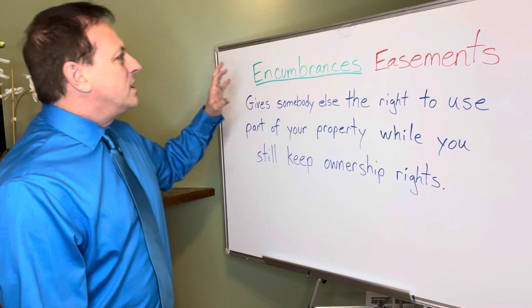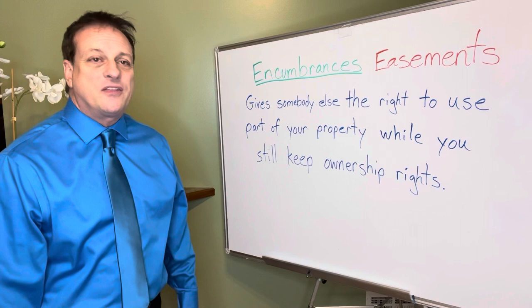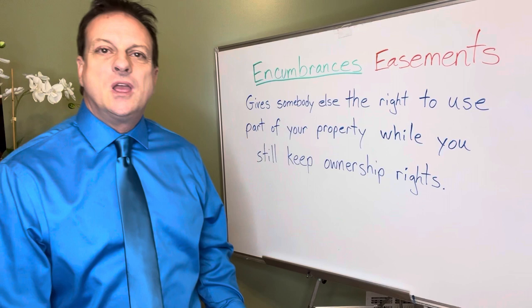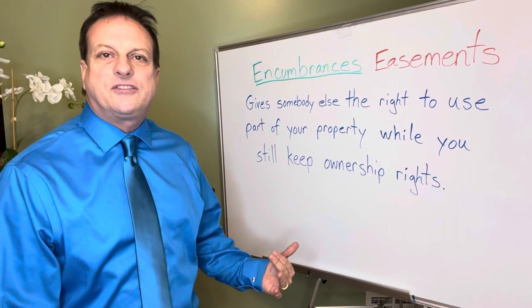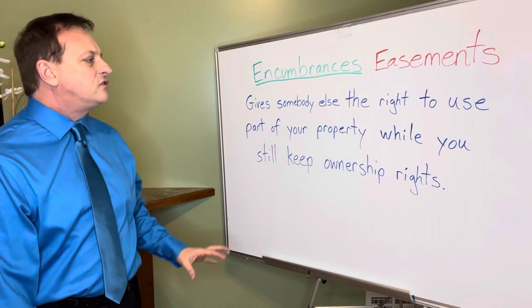An easement is a great example of an encumbrance. What is an easement? Screenshot this: an easement gives somebody else the right to use part of your property while you still keep the ownership rights. They do not get possessory rights — they just get the right of ingress and egress to come and do whatever it is that the easement is for.